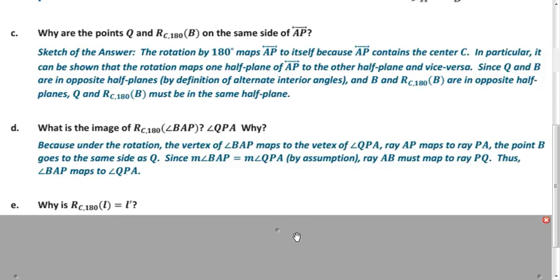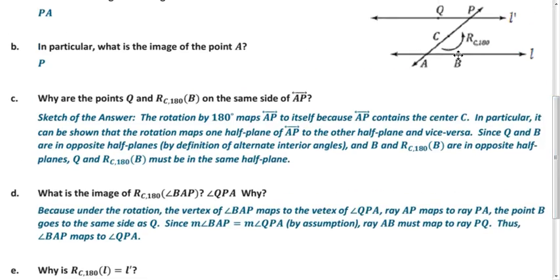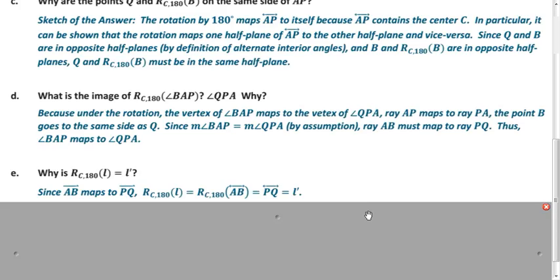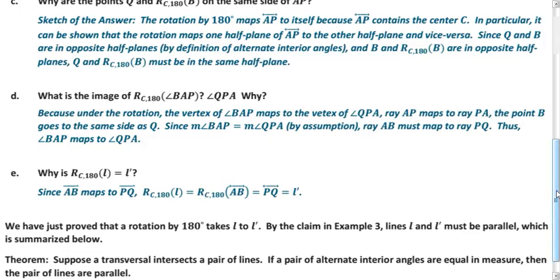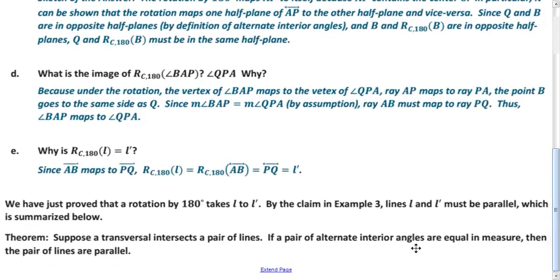Those angles map onto each other under the rotation. The image of line L is line L prime because ray AB maps onto ray PQ, and the rotation of line L — which contains that ray — yields line PQ, which is L prime. In summary, we showed that when the alternate interior angles are equal in measure, the lines are parallel.